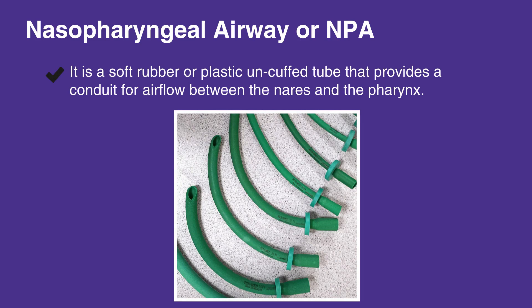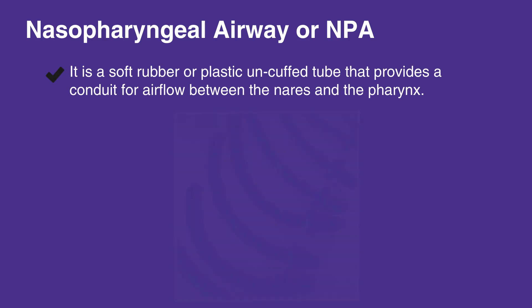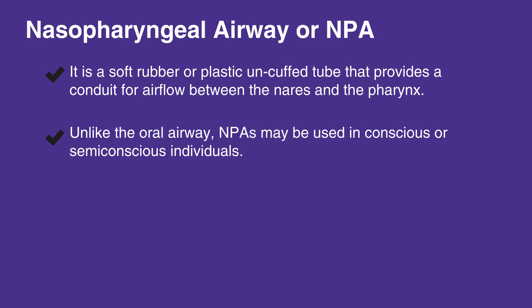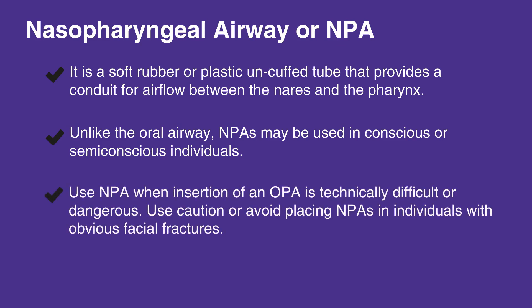The NPA is used as an alternative to an OPA in individuals who need a basic airway adjunct. Unlike the oral airway, NPAs may be used in conscious or semi-conscious individuals with an intact cough and gag reflex. Use the NPA when insertion of an OPA is technically difficult or dangerous. Use caution or avoid placing NPAs in individuals with obvious facial fractures.